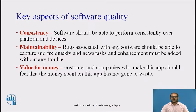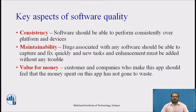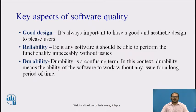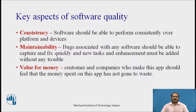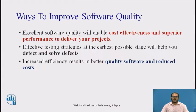Consistency means the software should be able to perform consistently over different platforms and different devices. Maintainability means bugs associated with any software should be captured and fixed quickly, and new enhancements must be added without trouble. Value for money means the customers and companies who make the application should feel the money spent has not gone to waste. These are the key aspects of software quality: good design, reliability, durability, consistency, maintainability, and value for money.